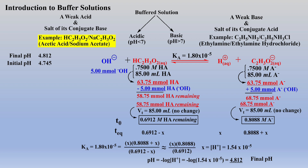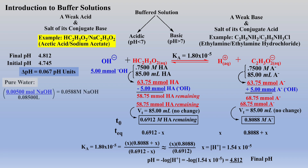Subtracting the initial pH of the buffer solution from the final pH after 0.2 grams of sodium hydroxide was added demonstrates the buffer solution changed by 0.067 pH units. Now let's compare that change with the resulting change if the same amount of sodium hydroxide was placed in an unbuffered solution or pure water.